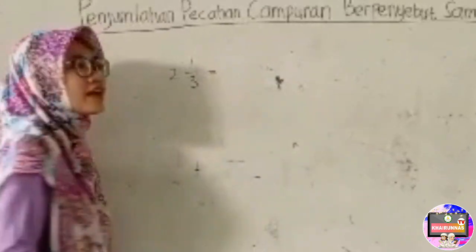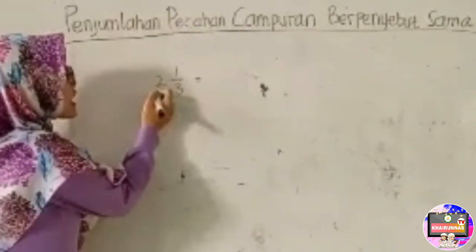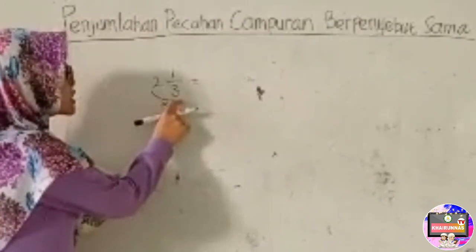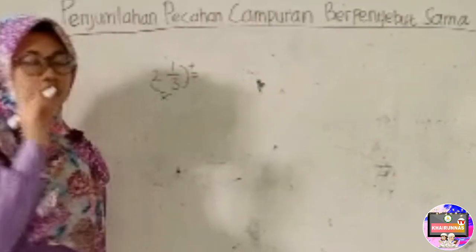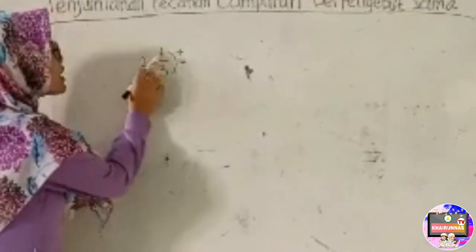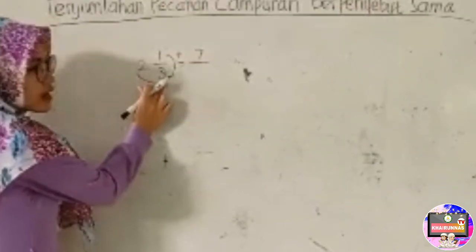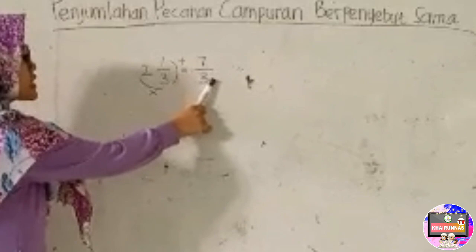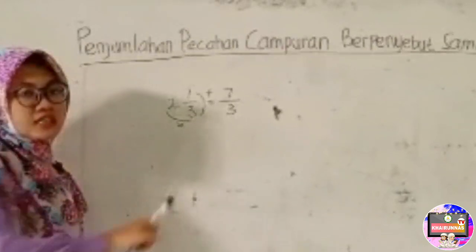Bagaimana caranya? Caranya adalah yang 2 ini, yang paling depan, yang bilangan asli, dikalikan dengan penyebut. Setelah dikalikan penyebut, kemudian ditambah dengan pembilang. Contoh: 2 kali 3 adalah 6. 6 ditambah 1 berarti 7, per 3. Jadi 7/3 adalah bentuk pecahan biasa dari 2 1/3.